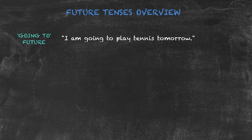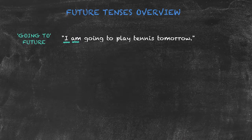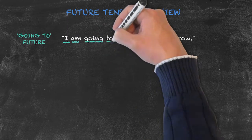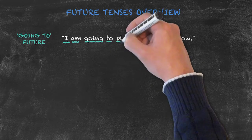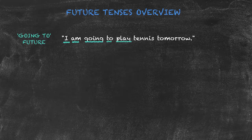The 'going to' future has the structure: subject plus the verb 'to be' in the present tense (am, is, or are) plus 'going' plus 'to' plus the verb in the base form. For example: I am going to play.